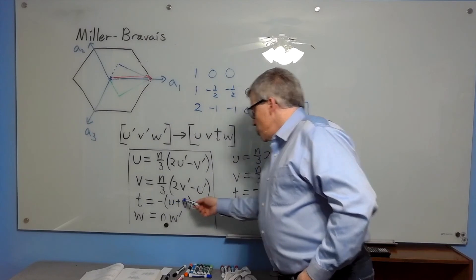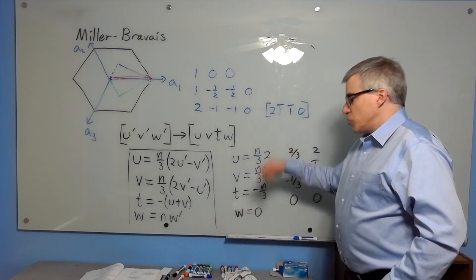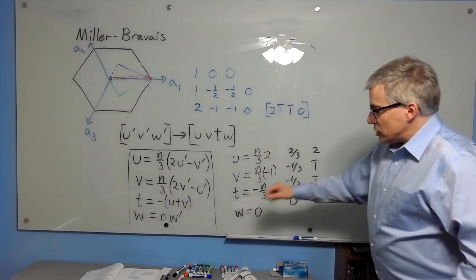The t is minus u plus v. And since that's 2 thirds n minus 1 third n is 1 third n. Put a minus on it, you have negative n over 3 again. And the z direction, or w direction, is 0.